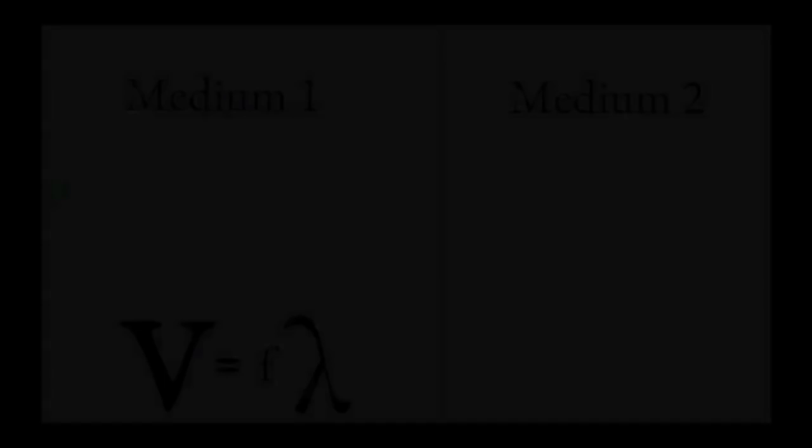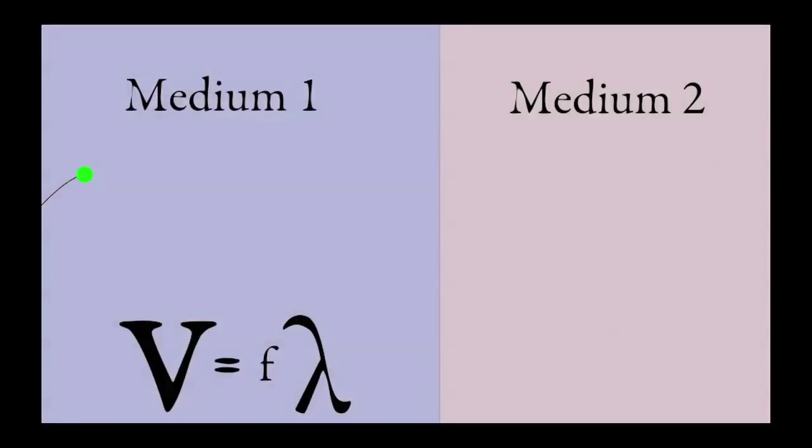Now, we can look at all of these factors at once in the following animation. Here, we see that the velocity is large, the frequency is medium, and the wavelength is large. As it enters the new medium, the frequency remains the same.